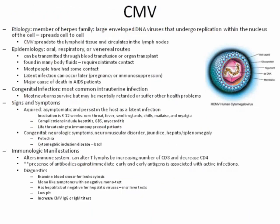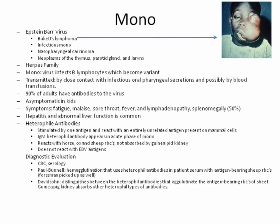Cytomegalovirus is a member of the herpes family. It can spread cell to cell and circulates in the lymph nodes. It's usually spread through oral, respiratory, or venereal routes. It's a major cause of death in AIDS patients, usually without causing major problems in healthy individuals. It can also cross the placenta and cause mental retardation, making it a very common intrauterine infection.